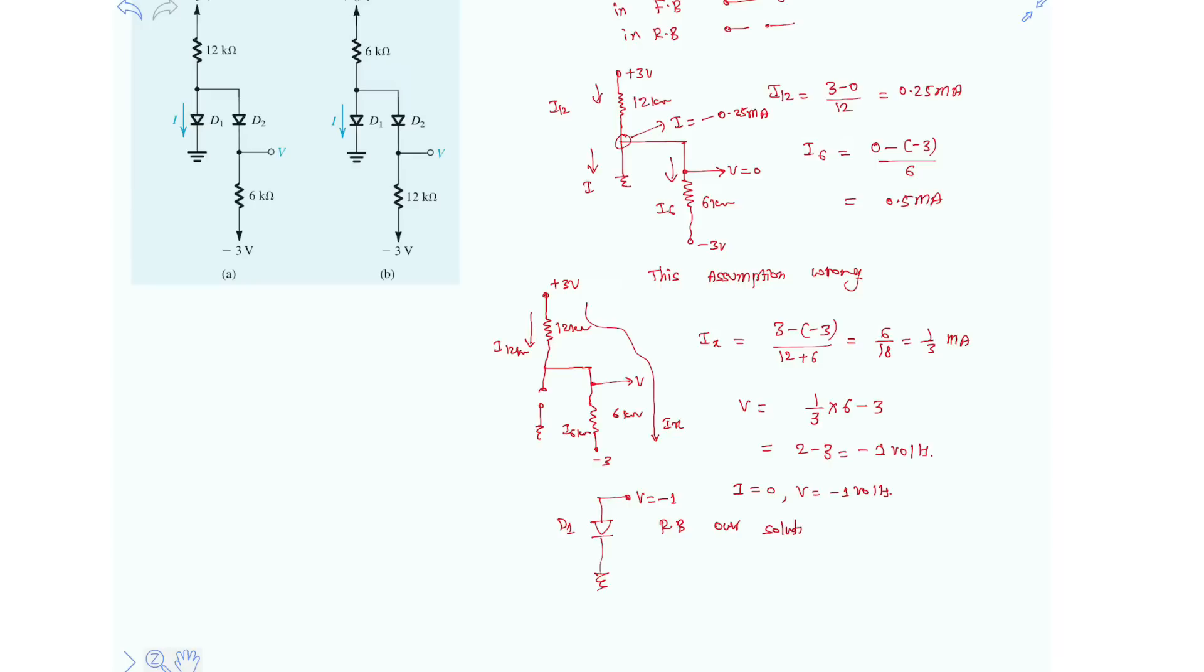Our solution is a valid one because D1 is reverse biased. Because we already assumed that D1 is reverse bias and D2 is forward bias. So this solution is the correct solution.